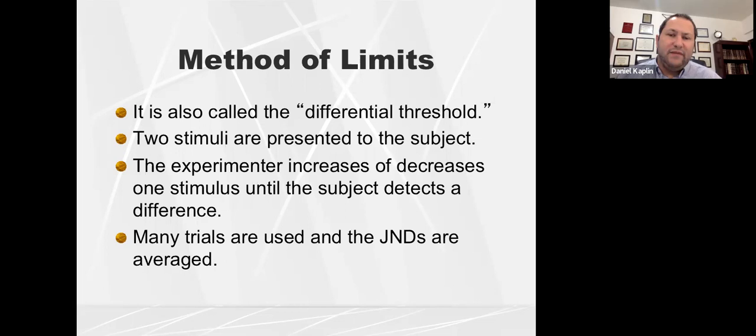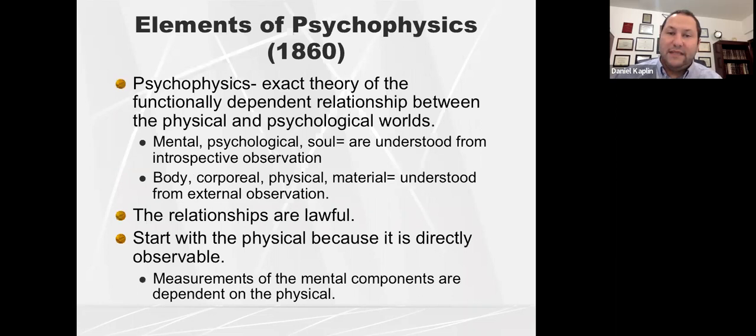Now, he also talked about the method of limits, which is your threshold or the differential threshold. You have two stimuli presented, and ultimately we're either increasing or decreasing the difference between the two to quantify, well, where did you detect that difference and where do you no longer detect that difference. So we're able to identify that threshold that he talked about. And of course, because they're scientists, they use many trials over and over and over, and they average them so that they don't get error in the data set. So that's the method of limits.